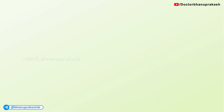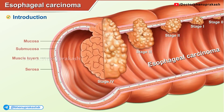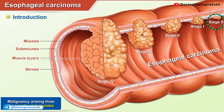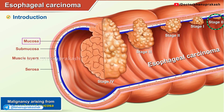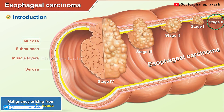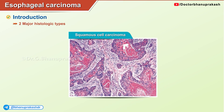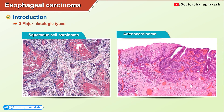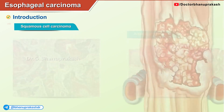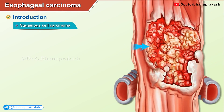Esophageal carcinoma is a malignancy arising from the esophageal mucosa. There are two major histologic types: squamous cell carcinoma and adenocarcinoma.